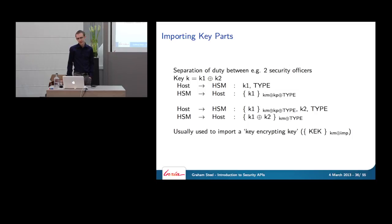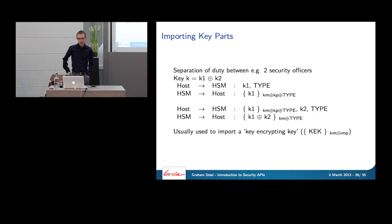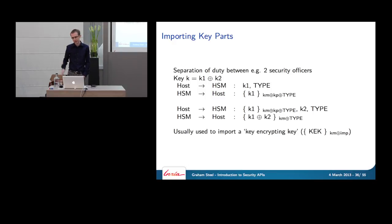The second security officer then takes the output from the first command, types in K2, and specifies the key type. The CCA decrypts the partial key by constructing KM XOR KP XOR type, obtaining K1, then XORs it with K2. The result K1 XOR K2 — the secret key K — is encrypted under KM XOR type, with the KP partial-key marker removed. The secret key K has been successfully entered into the device, encrypted under the right control vector, without any bits of K ever being revealed in the clear.